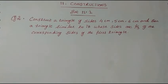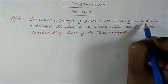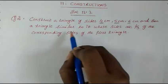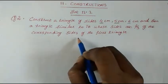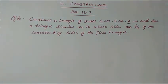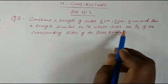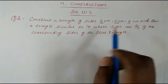Hi everyone, welcome to Mash Math. Today we are going to study Chapter 11 Constructions, Exercise 11.1, Question 2: construct a triangle of sides 4 centimeters, 5 centimeters, 6 centimeters, and then a triangle similar to it whose sides are 2/3 of the corresponding sides of the first triangle. I have explained in the introduction part how to construct a similar triangle.